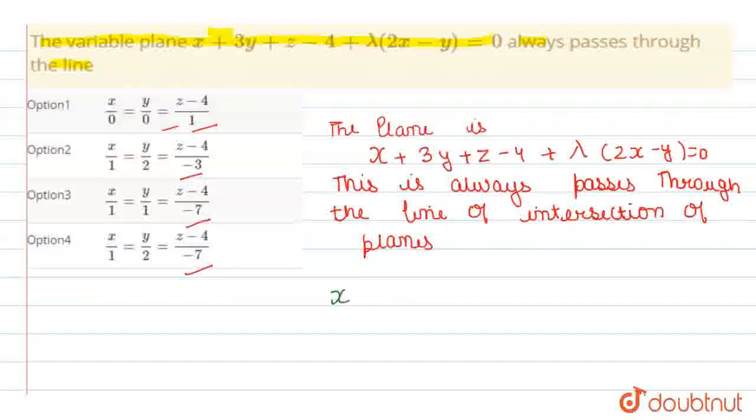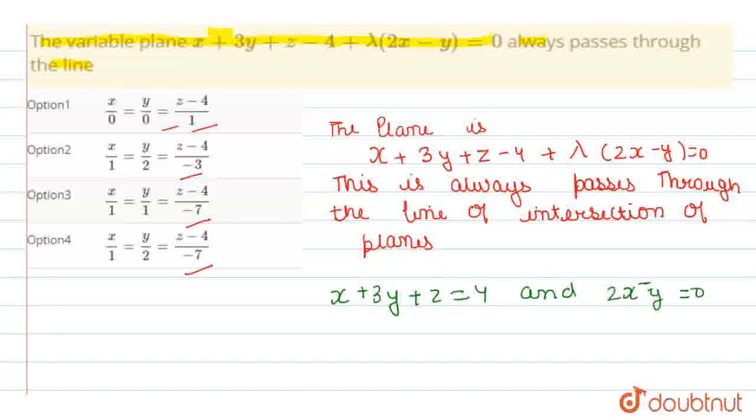From this we get x plus 3y plus z equal to 4 and 2x minus y equal to 0. From this we can say that x over 1 equals y by 2.